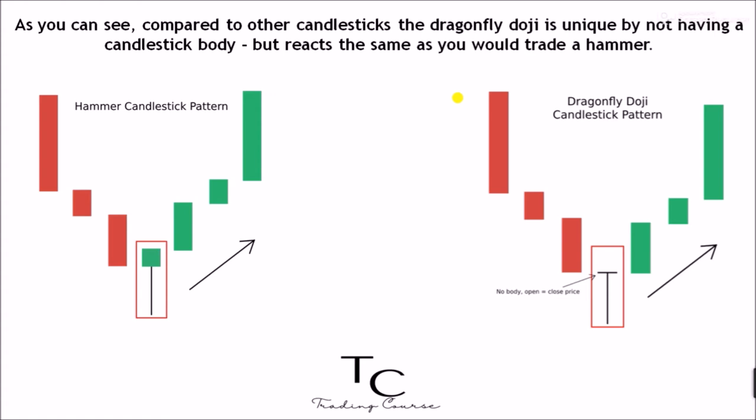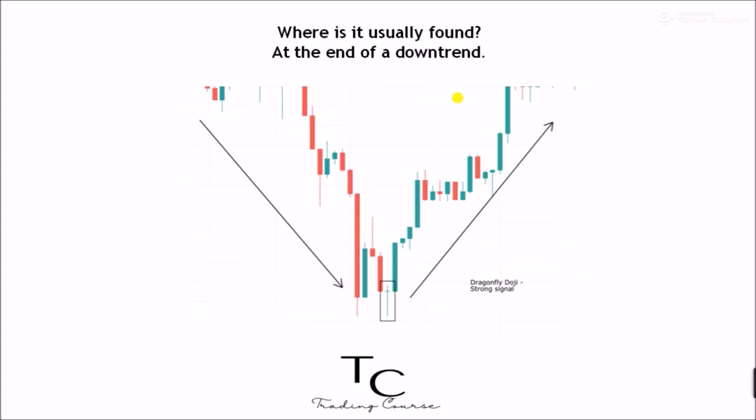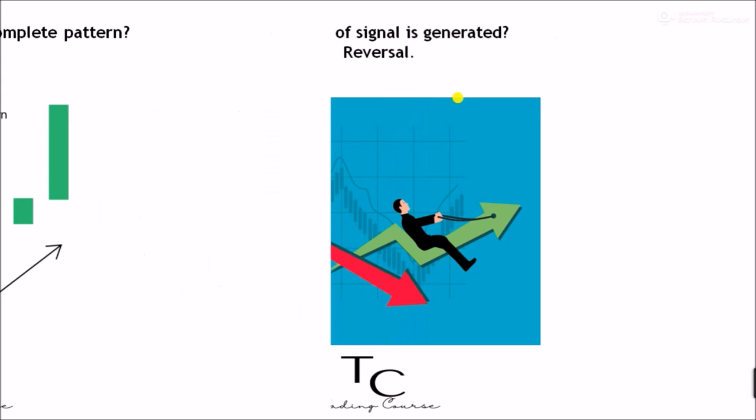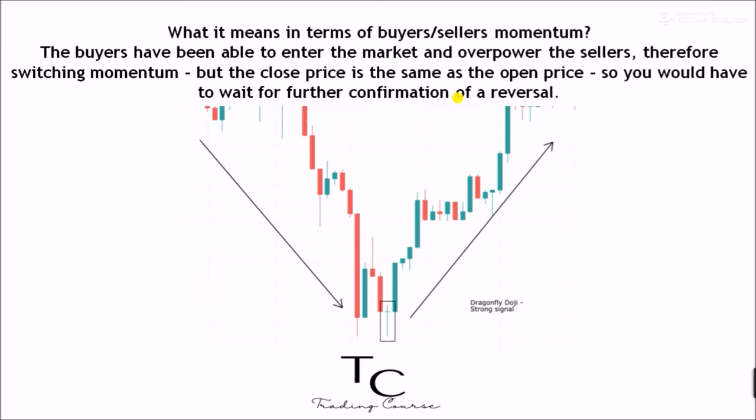Quick action summary of the dragonfly doji pattern: where is it usually found — at the end of a downtrend. Number of candlesticks to complete the pattern — one. Type of signal generated — reversal. Strength of signal — medium. In terms of buyers and sellers momentum, the buyers have been able to enter the market and overpower the sellers, therefore switching momentum.